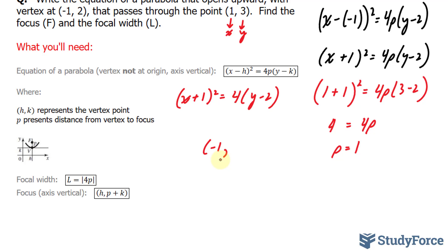p was one, and k is two. Two plus one is three. This means that the focus is at (-1, 3), right above the vertex as shown in this illustration.